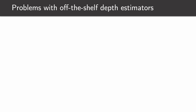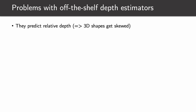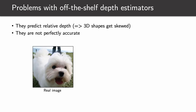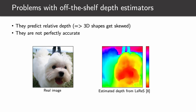Using such a pipeline as-is could be problematic, since the LeReS depth estimator is not perfect. First, it returns relative depth, which makes the real shapes of objects skewed when one relies exclusively on the depth maps. Second, LeReS has some prediction imperfections. Take this image as an example — it has an estimated depth map where the left eye of the dog is incorrectly further away than its right eye and the nose bridge. Also, the legs of the human far away are predicted to be closer to the camera than the dog's tail. This all motivates us to develop the following component.